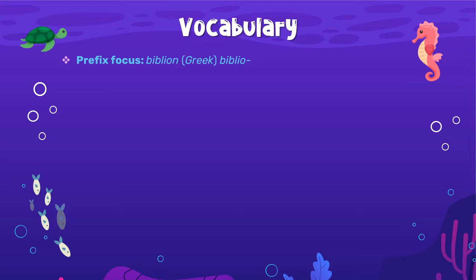Think about what that word looks like. It looks like Bible, right? And what kind of book is the Bible? Well, it's a book. The Bible is a book. And so that means that this word is our word for book. This prefix means book. So every time you see biblio, think something related to book.